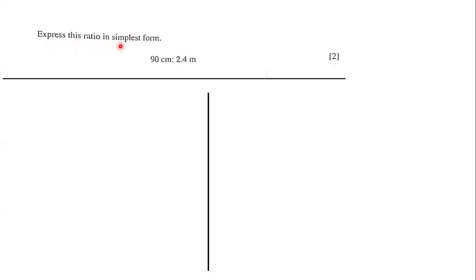Express this ratio in simplest form. Here we have 90 centimeters to 2.4 meters, and our goal is to express this ratio in simplest form. Notice that the units are not the same - the units are different.